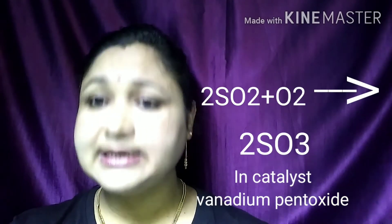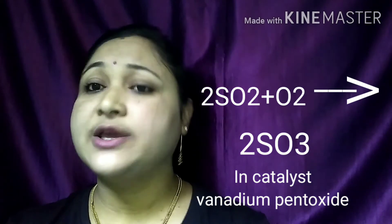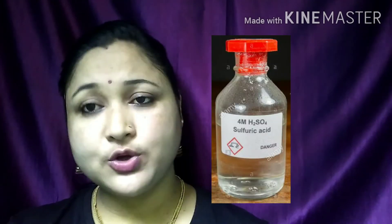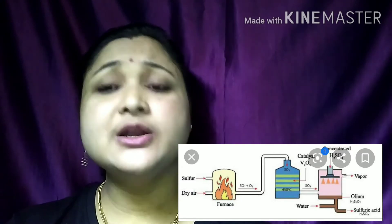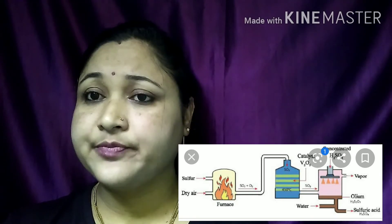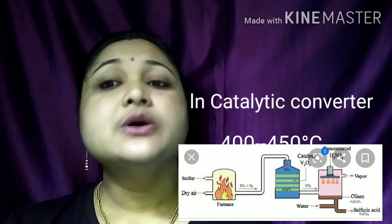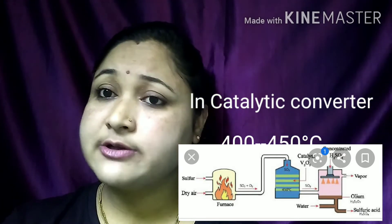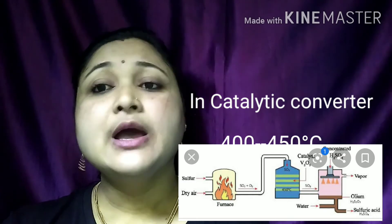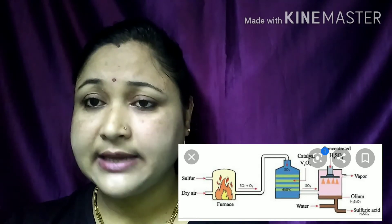In the second step, in the catalytic converter, sulfur dioxide is oxidized to form sulfur trioxide (SO₃) in the presence of a catalyst. The catalyst used is vanadium pentoxide or platinum. A catalyst is a chemical compound that increases the rate of reaction without itself being changed or taking part in the reaction. The temperature required is more than 400°C.